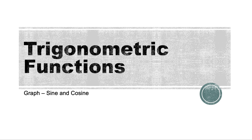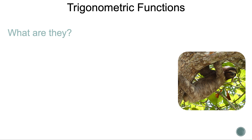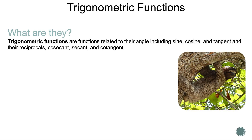Trigonometric functions — graph sine and cosine. What are they? Trigonometric functions are functions related to their angle, including sine, cosine, and tangent, and their reciprocals, cosecant, secant, and cotangent.